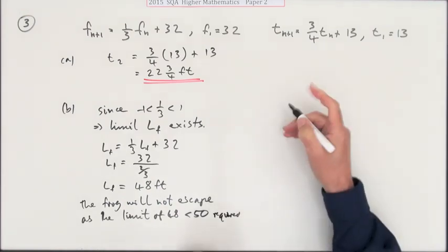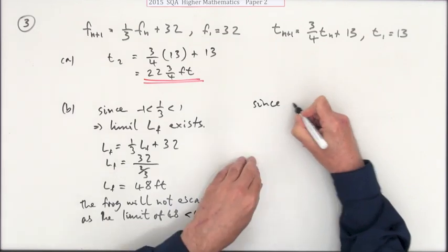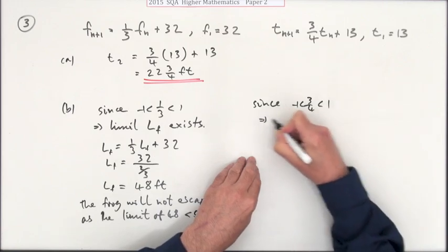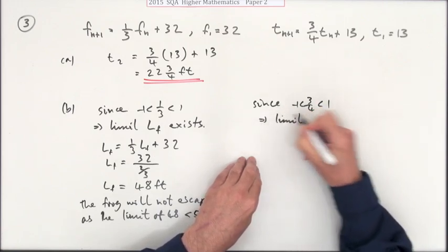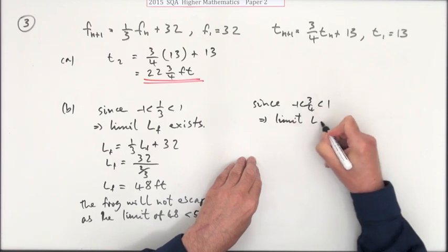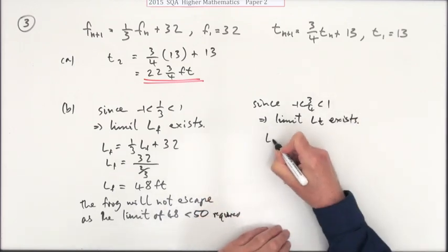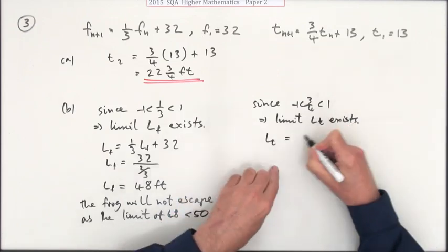What about the toad? Same thing applies. Since three quarters is a proper fraction, that means the limit exists. A limit Lt for the toad exists. So we can write down that at the limit, if you take three quarters of it and add 13, you're back to L again.